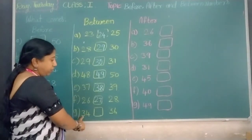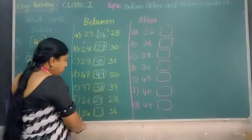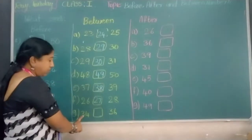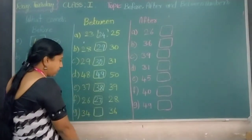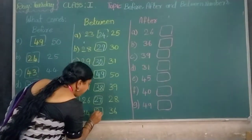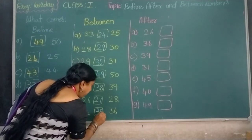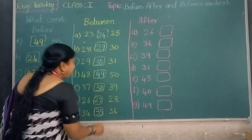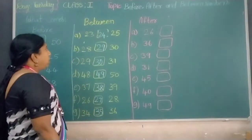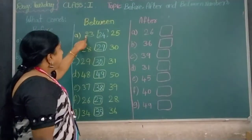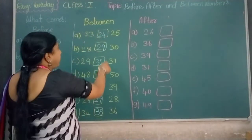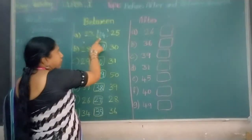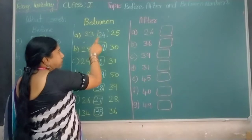Which number comes in between 34 and 36? Number 35 comes in between. 23 and 25: number 24 comes in between.